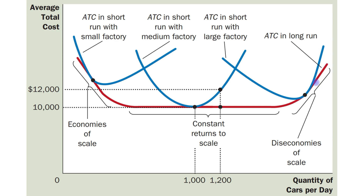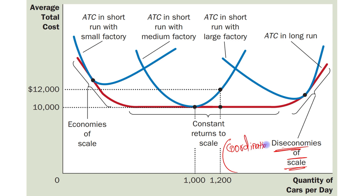So this portion, in which long run average total cost is increasing, represents diseconomies of scale, and it is increasing because of coordination problems.